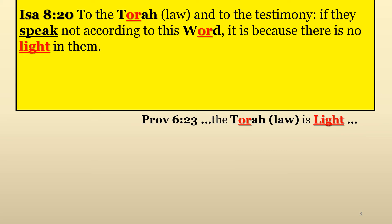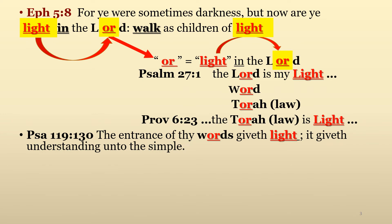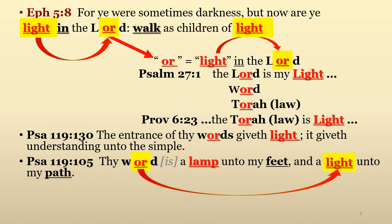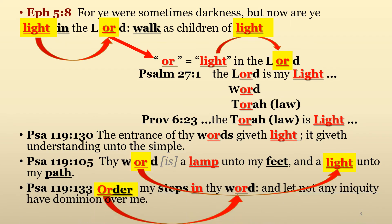The following scriptures shed further light on this discussion and demonstrate how consistent God is in His word. Psalm 119:130 — 'The entrance of thy words gives light; it gives understanding unto the simple.' Psalm 119:105 — 'Thy word is a lamp unto my feet, and a light unto my path.' Psalm 119:133 — 'Order my steps in thy word, and let not any iniquity — that is, breaking of the Torah, lawlessness — have dominion over me.'